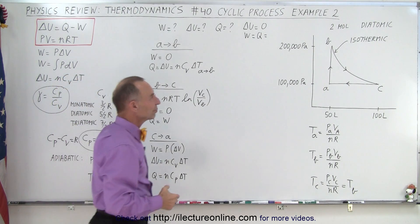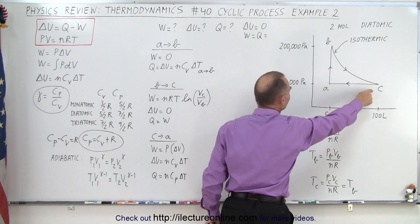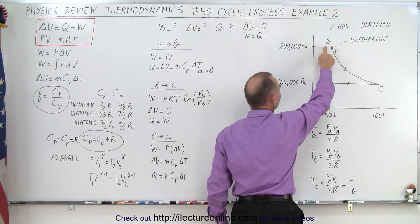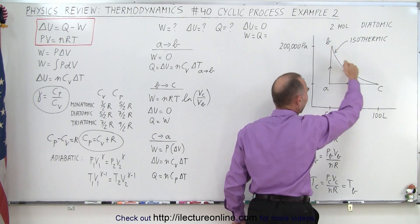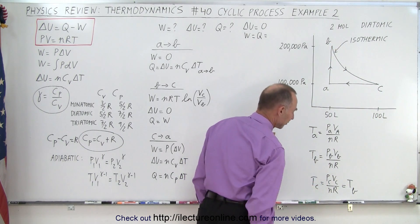What you will have to do is find the temperature at these various points, at A, at B, and at C. Of course, the temperature at B must equal the temperature at C, because this is an isothermic process where the temperature doesn't change. So we have indicated that over here.